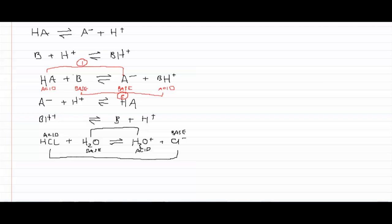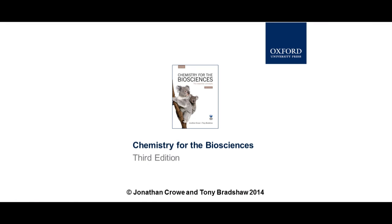So if we look here we can see that we have hydrogen chloride and the chloride ion acting as one conjugate acid-base pair. And we have water and the hydronium ion acting as our second conjugate acid-base pair.